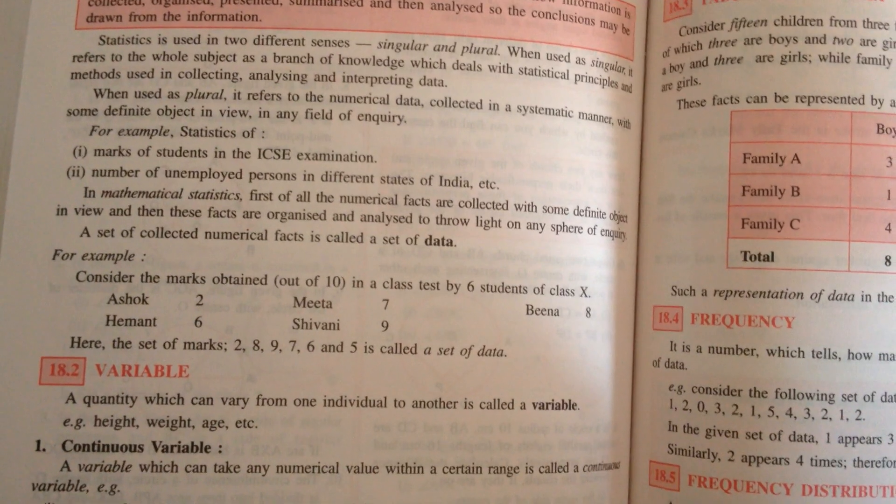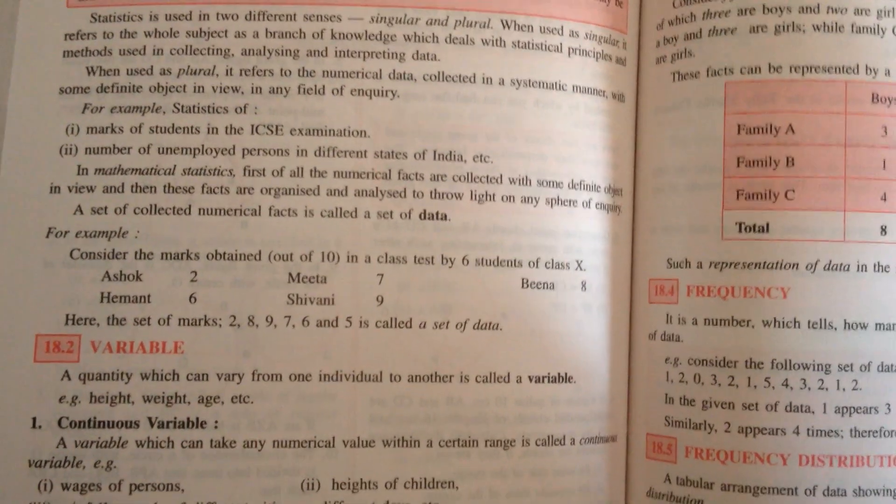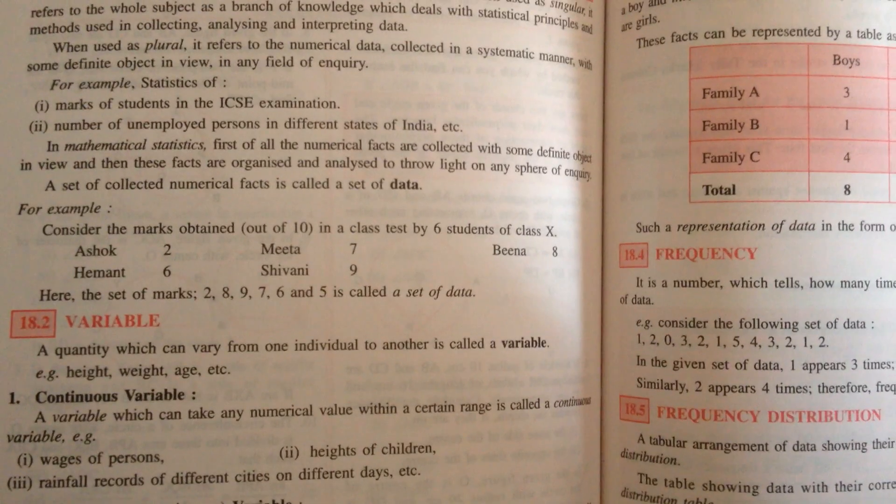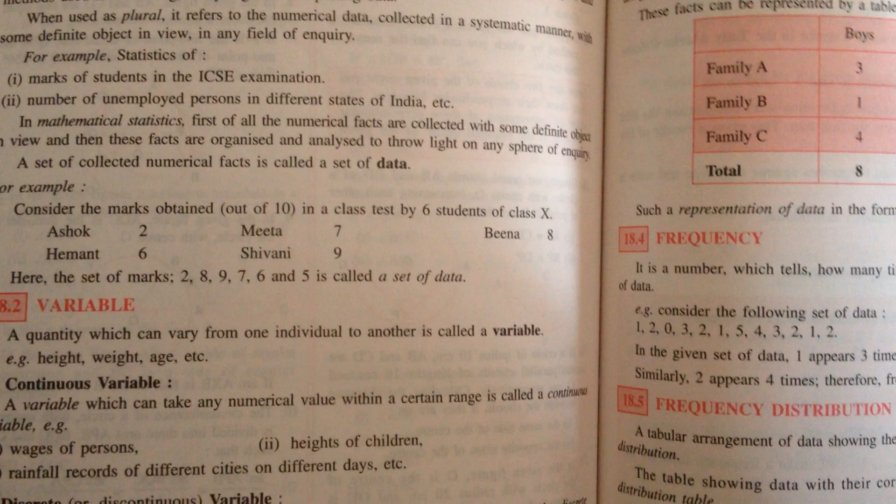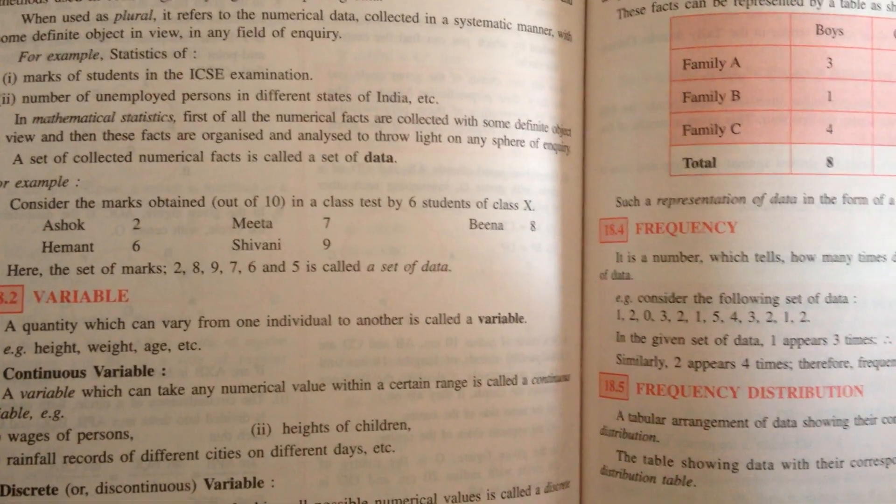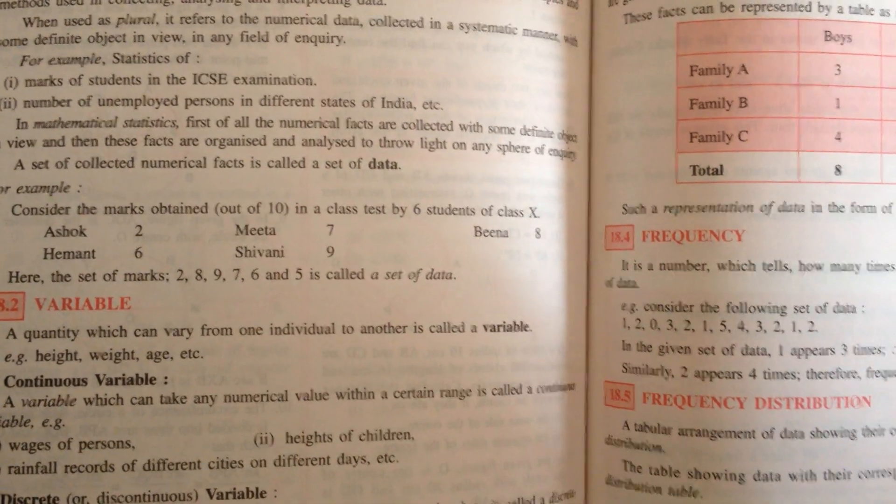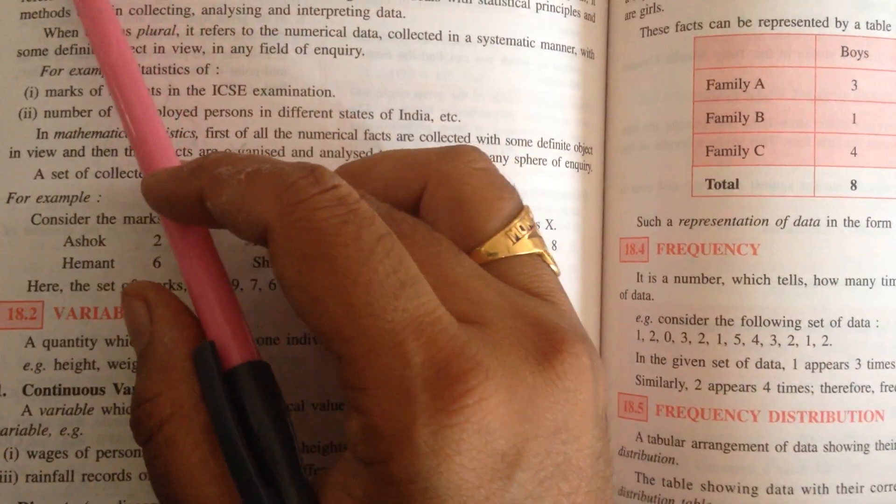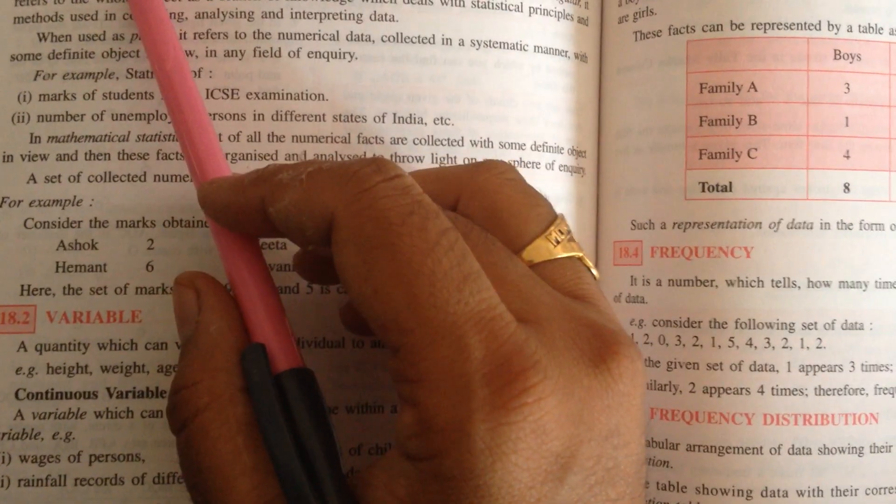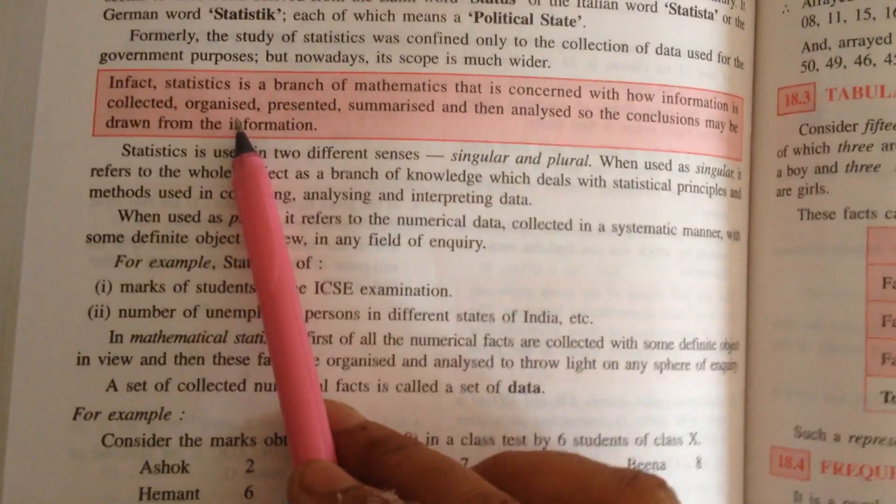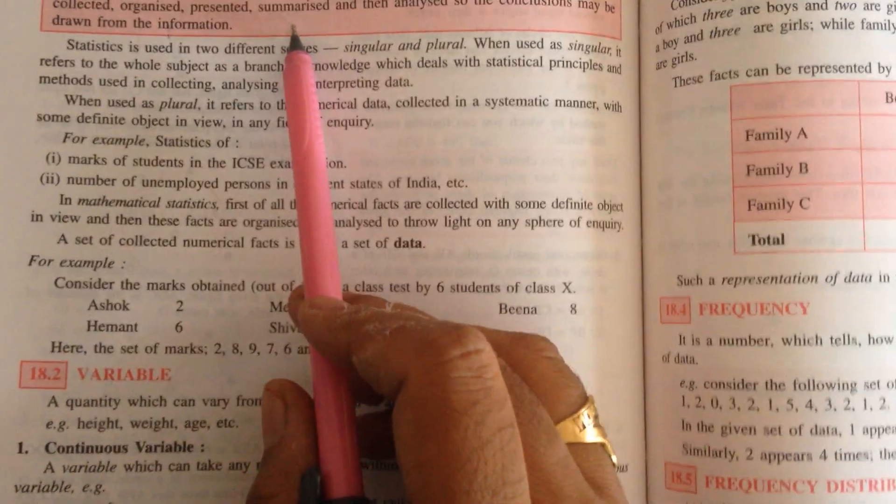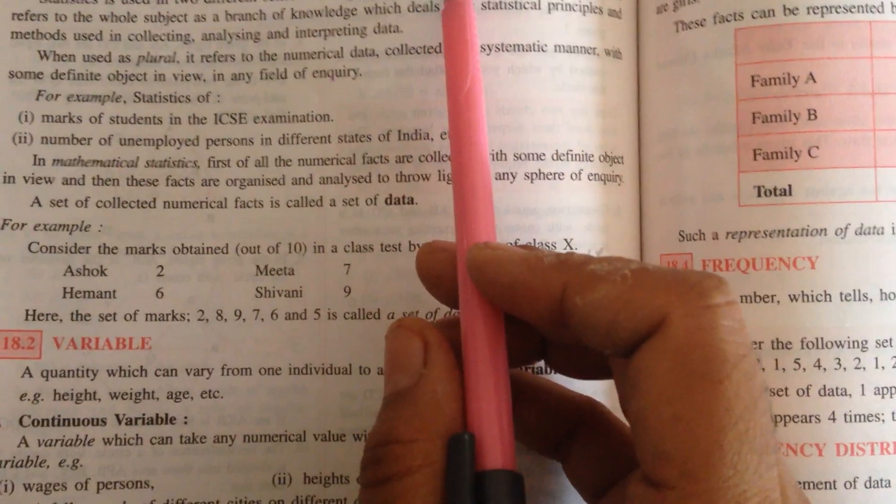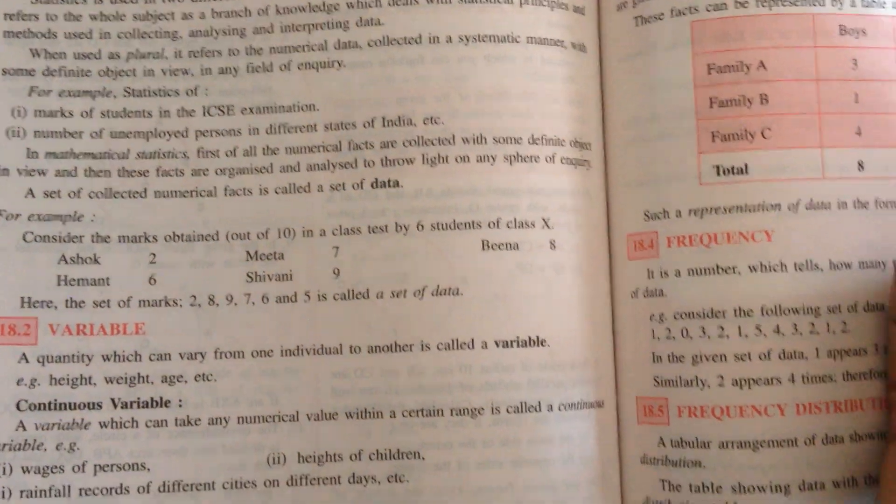Data is a set of collected numerical facts, or we can say it is a collection of information. Whatever information we have, that is known as data. We need to arrange it in a systematic way, summarize, then analyze. First of all data is collected, then we will organize the data into a table form or any other ways, then we will present the data, summarize and then analyze.